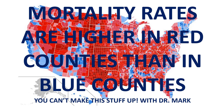A study was published recently in the British Medical Journal that examined mortality rates county by county in all but a handful of counties in the United States from the year 2000 through 2019. The study then compared the difference in mortality rates between those counties that voted primarily Republican and those that voted primarily Democratic during the time period, and found some surprising results.